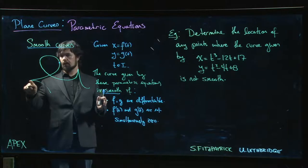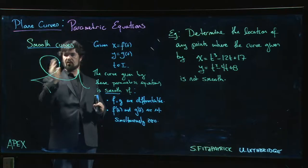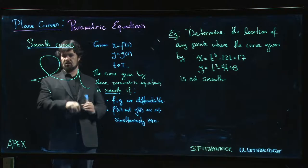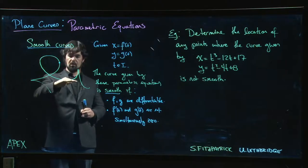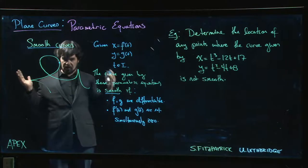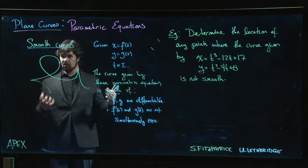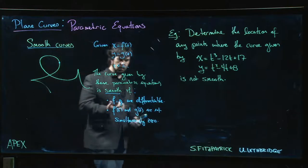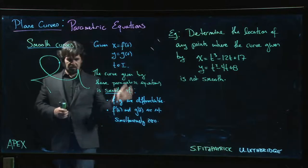Local min and max values for x might correspond to vertical tangents, local min and max values for y could correspond to horizontal tangents. We get a lot of that same stuff: horizontal tangents, vertical tangents, cusps. These are going to be where our extreme values occur.